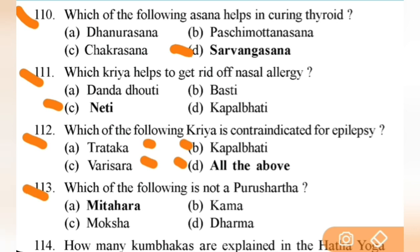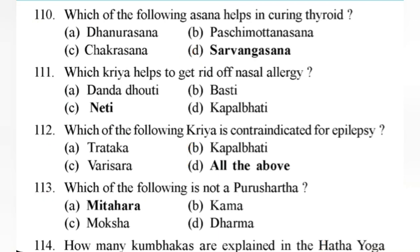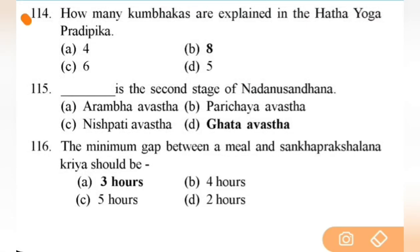Which of the following is contraindicated for epilepsy? Right answer is all of the above — Trataka, Kapalabhati, Vari Sara. Next: which of the following is not a Purushartha? Right answer is Mitahara. Next: how many Kumbhakas are explained in the Hatha Yoga Pradipika? Right answer is eight types of Kumbhaka. Next: the second stage of Nadanusandhana is — right answer is D — Ghata Avastha — important.